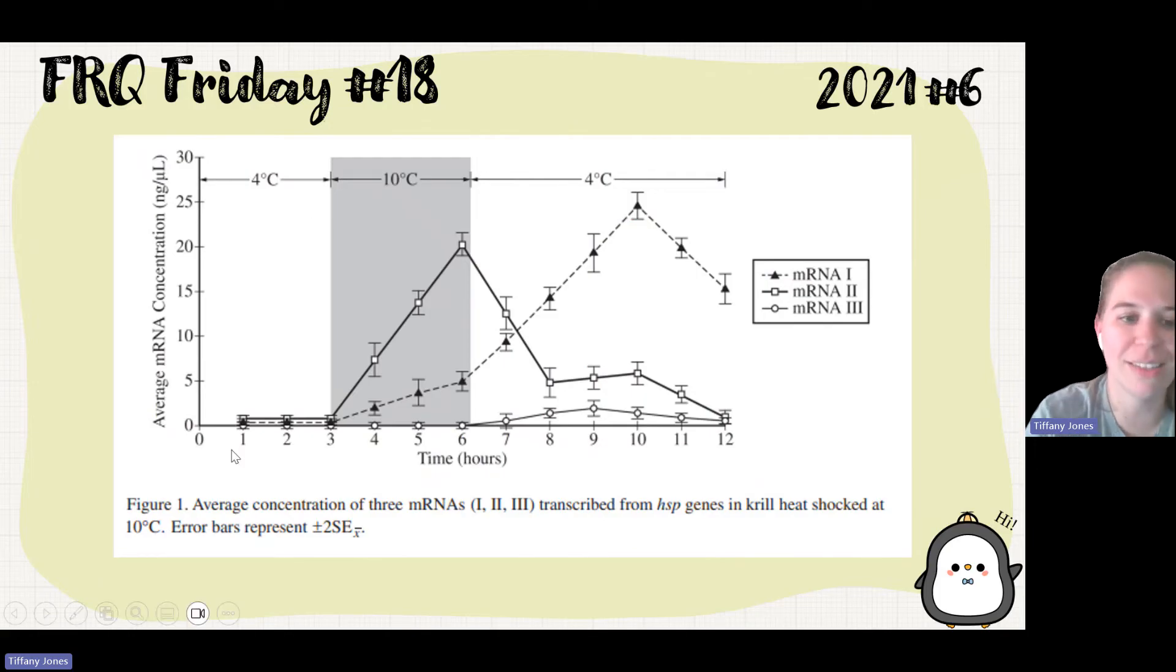So you can see that all three mRNAs kind of stayed at basically zero for the original solution of 4 degrees Celsius. And then we see the mRNA 2 increases while we're in heat shocking. And then mRNA 1 will increase after the heat shock while there's a little bit of increase of 3 afterward.